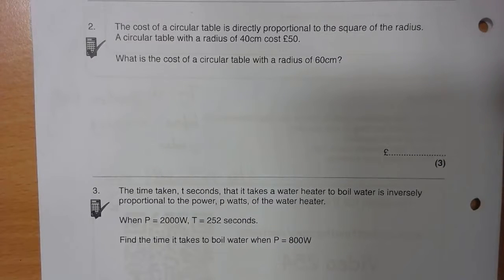Question 2. The cost of a circular table is directly proportional to the square of the radius. A circular table with radius 40 cm costs £50. What is the cost of a circular table with a radius of 60 cm?